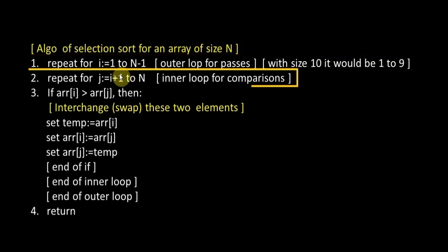After that, we come to the inner loop, which is used for comparisons: repeat for j = i+1 to N. As you know, in Selection Sort we select an element and keep comparing it with the rest of the elements. For the first time when the value of i is 1, the value of j will be 2.